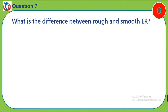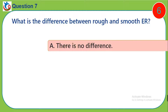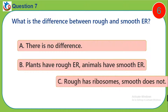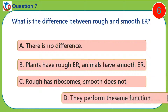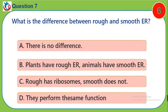Question 7. What is the difference between rough and smooth endoplasmic reticulum? A. There is no difference. B. Plants have rough endoplasmic reticulum, animals have smooth endoplasmic reticulum. C. Rough has ribosomes, smooth does not. D. They perform the same function.